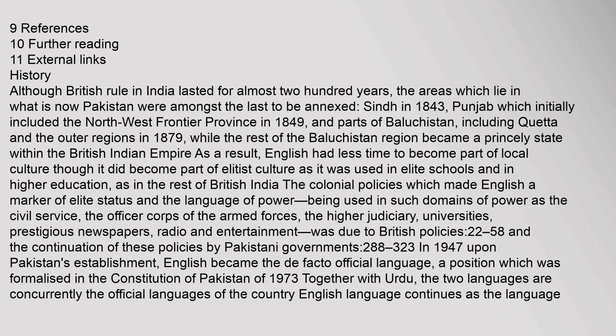Although British rule in India lasted for almost 200 years, the areas which lie in what is now Pakistan were amongst the last to be annexed — Sindh in 1843, Punjab (which initially included the northwest frontier province) in 1849, and parts of Baluchistan, including Kedda and the outer regions in 1879, while the rest of the Baluchistan region became a princely state within the British Indian Empire.